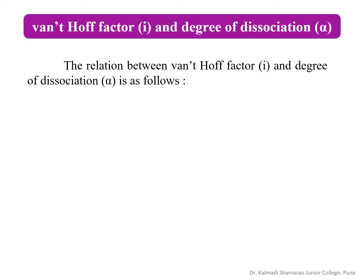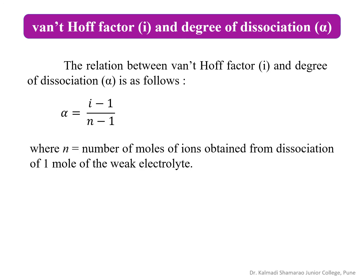The relation between the Van't Hoff factor i and the degree of dissociation alpha of a weak electrolyte is as follows: alpha = (i - 1) / (N - 1), where N is the number of moles of ions obtained from dissociation of 1 mole of the weak electrolyte.